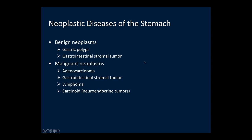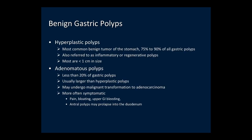We'll now turn our attention to neoplastic diseases of the stomach, discussing benign and malignant tumors. Gastric polyps are the most common benign tumors of the stomach. Hyperplastic polyps, also referred to as inflammatory or regenerative polyps, are the most common and are not neoplastic. Most are less than one centimeter in size and discovered incidentally. Adenomatous polyps are less common, usually larger, and have the potential to transform into adenocarcinoma. Most patients are symptomatic with pain, bloating, and upper GI bleeding.